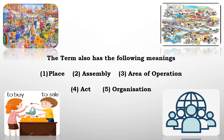The third meaning is it is the area of operation — the entire area where marketing takes place we can refer to as market. The fourth concept is the act: just the act of buying and selling a product we can term as market. So it's not just the place or where buyers and sellers meet — it also refers to just the act of buying and selling things.